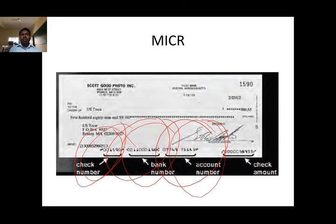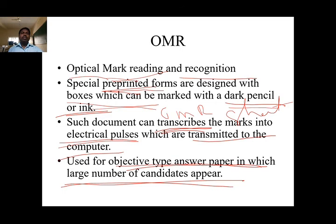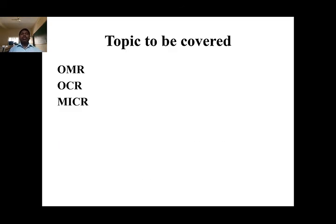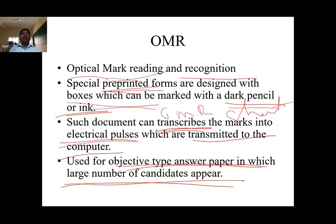Dear students, I am going to conclude this video with a summary. In today's lecture, we discussed three topics: OMR, OCR, and MICR. OMR stands for Optical Mark Reading and Recognition. OCR stands for Optical Character Recognition. MICR stands for Magnetic Ink Character Recognition. An OMR sheet is a special pre-printed form designed with boxes, which can be marked with dark pencil or ink. Such a document transcripts the marks into electrical pulse which are transmitted into the computer.